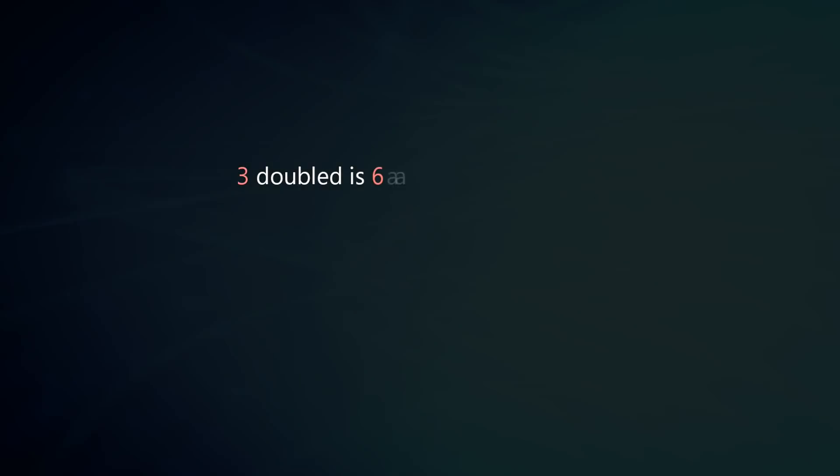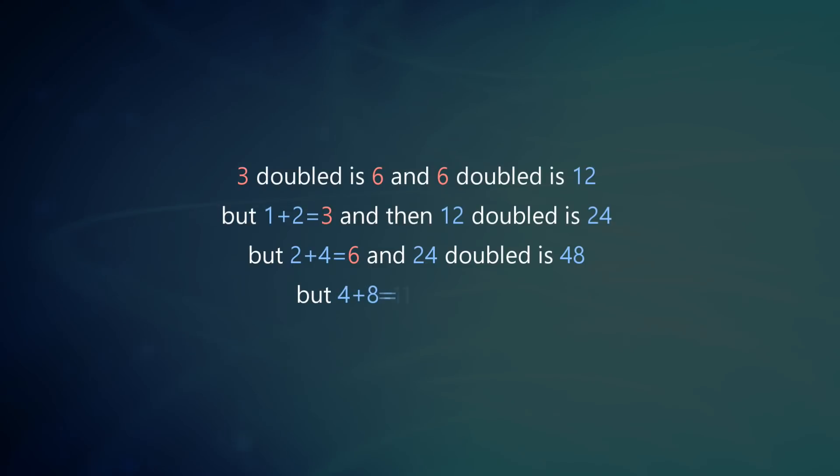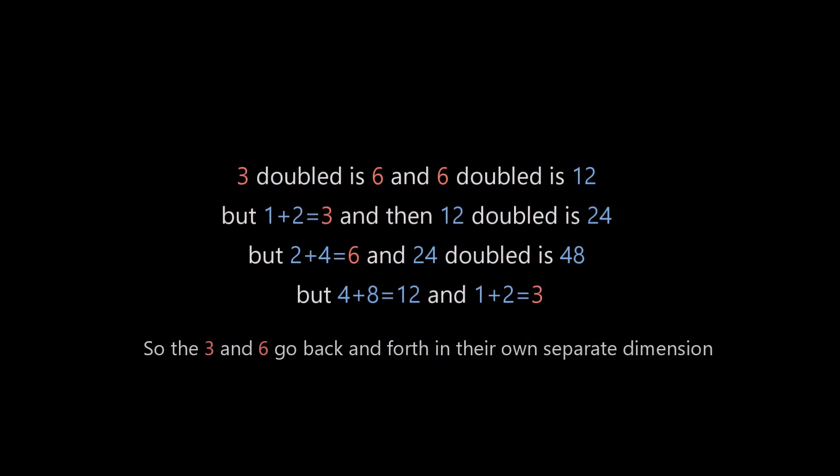When I say the oscillation between a 3 and a 6, what I mean is that 3 doubled is 6, and 6 doubled is 12. But 1 plus 2 equals 3. And then 12 doubled is 24. But 2 plus 4 equals 6. And 24 doubled is 48. So 4 plus 8 equals 12. And 1 plus 2 equals 3. So the 3 and a 6 go back and forth in their own separate dimension.